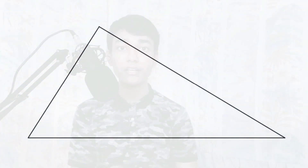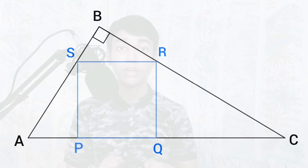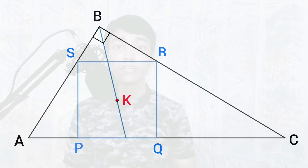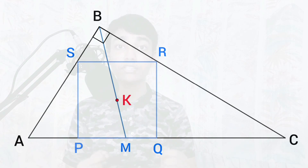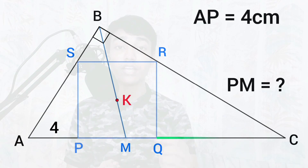Today we have a nice classical geometrical problem. We take a right angle triangle ABC in which angle B is 90 degrees. We draw a square inside this triangle and label its corners as PQRS. We mark the center of the square and label it as K. We then draw a line segment from point B to the hypotenuse AC passing through point K, and label the intersection as M. The question is to find the length of line segment PM, given that AP = 4 cm and QC = 9 cm.